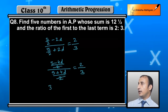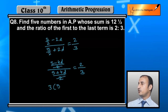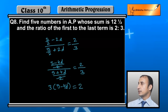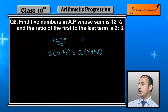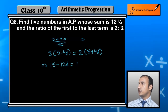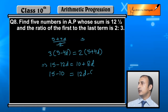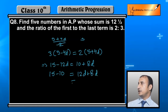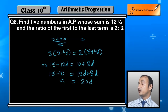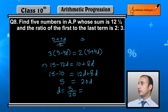अब cross multiply करेंगे: 3 की cross multiply (5 minus 4d) में और 2 की (5 plus 4d) में। 3 को bracket के अंदर multiply कराएंगे: 15 minus 12d। 2 को multiply कराएंगे: 10 plus 8d। 15 minus 10 equals 12d plus 8d, so 5 equals 20d। Therefore d is equal to 5 upon 20, that is 1 upon 4। d की value 1 upon 4 आ गई।